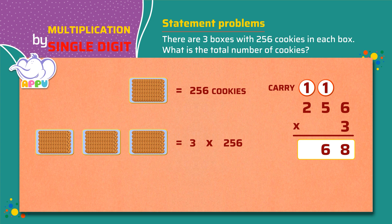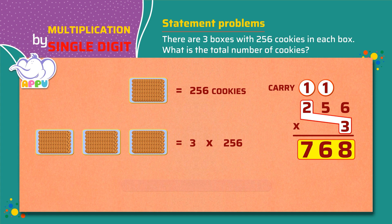Multiply the number in the hundreds place by 3, which is 2 times 3 equals 6. Then add the carry to get 6 plus 1 equals 7. The answer is 768. There are 768 cookies in 3 boxes.